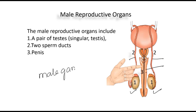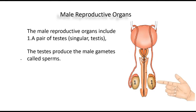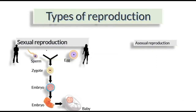The testes produce male gametes. Male gametes are called sperm. Sperm is produced in these two testes, and they are responsible for fertilization. Testes produce male gametes called sperm, and sperm is required for sexual reproduction.